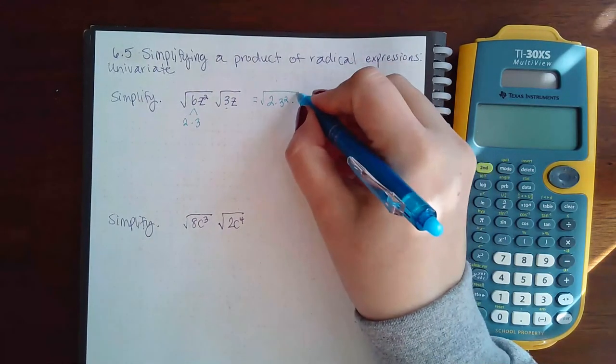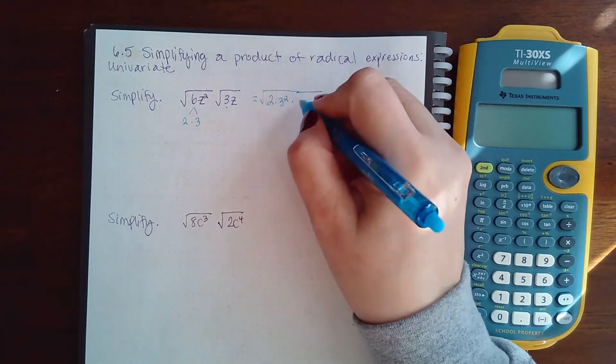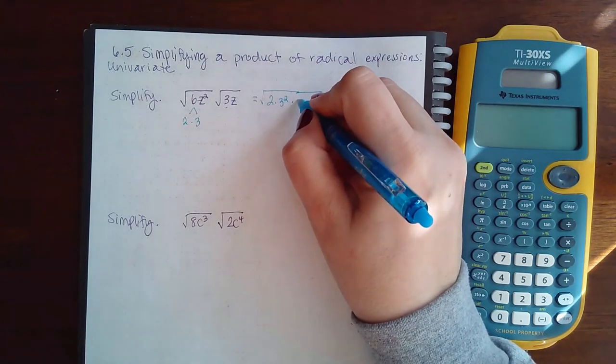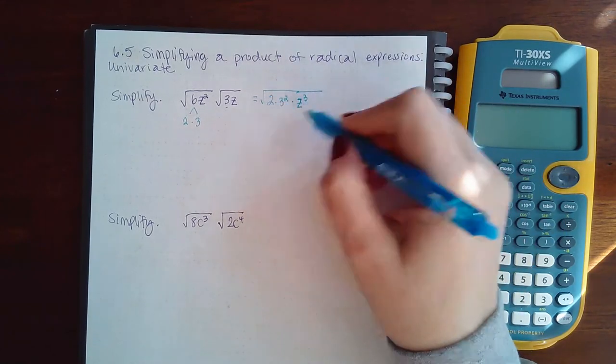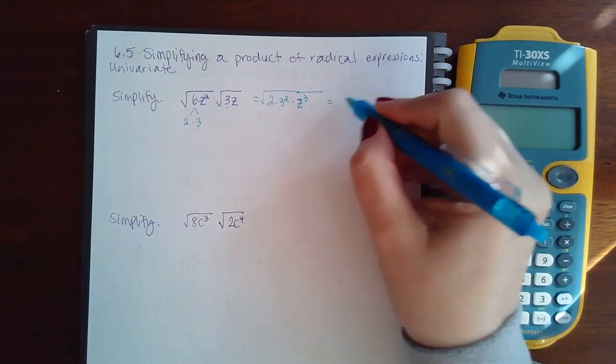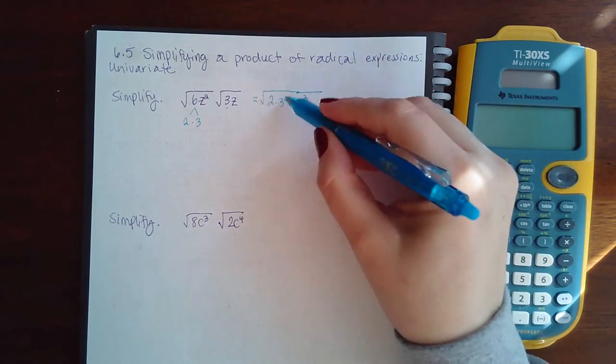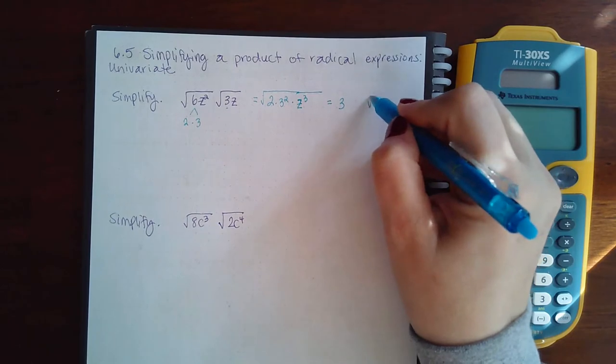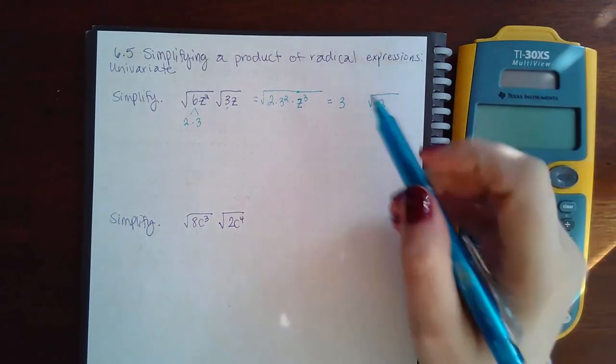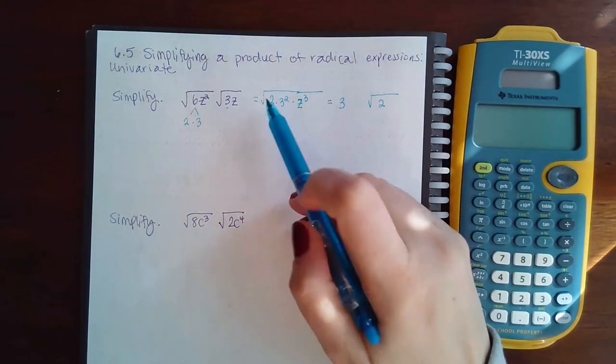Then I have z squared and z which is going to be z to the third. Now that it's all in its prime factorization form, I can take the square root of 3 squared and a 3 will come out. I cannot take the square root of 2, so the 2 will stay in.